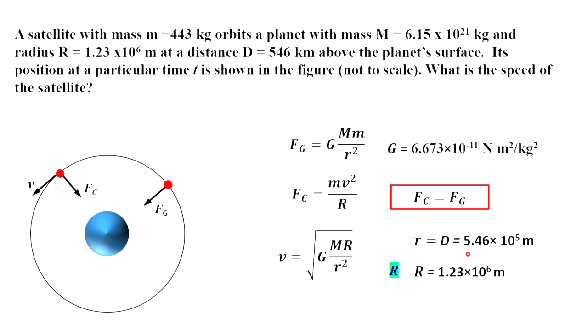For R, he took the radius of the planet, which is equal to this value. And after simple calculations, he got the answer that the speed is approximately 1300 meters per second.